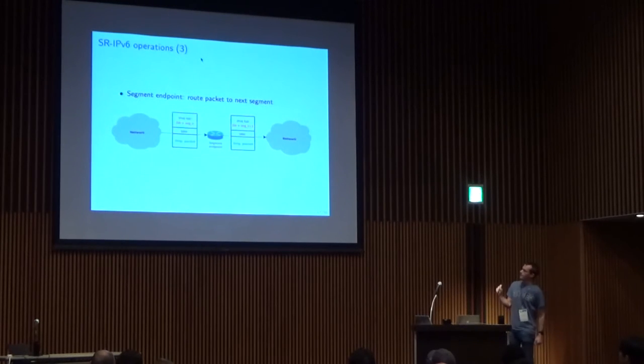The third operation is the segment endpoint. It is when the packet reaches a segment endpoint that is in the middle of the path. What it will do is it will inspect the SLRH, look at the current segment and the pointer, and simply decrement the pointer and update the destination address of the packet to the next segment and route the packet accordingly.